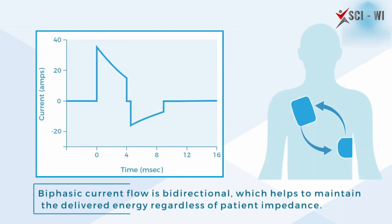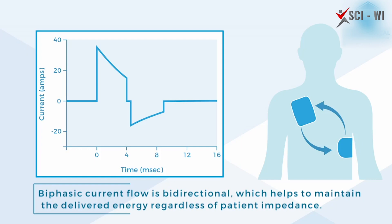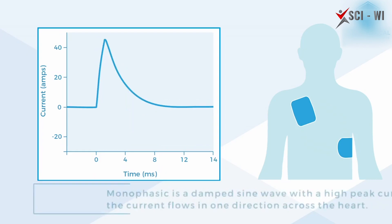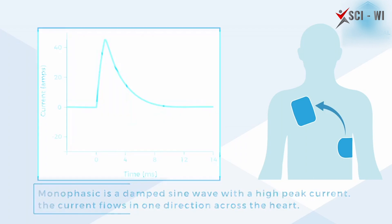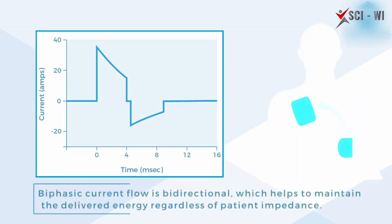In monophasic machines, the delivered current is high, which is why these machines were usually on the bulkier side. However, most manufacturers have ceased the production of monophasic devices and have started producing biphasic devices.